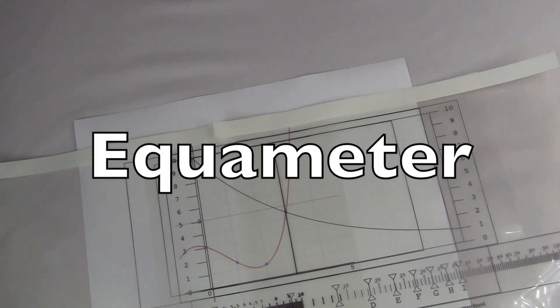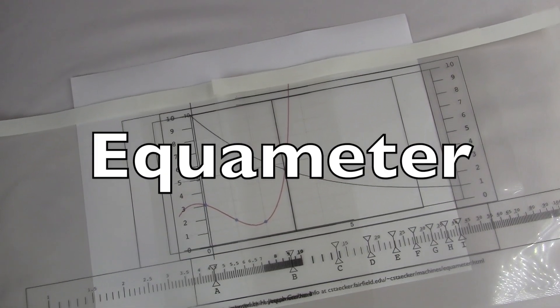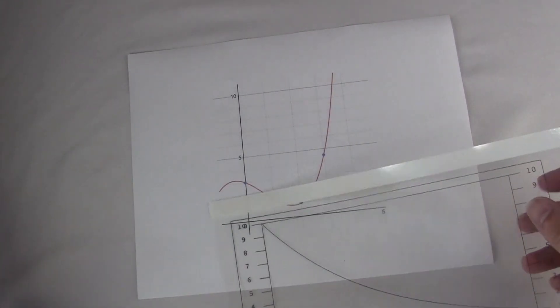This is the Equimeter, patented in 1959 by H. Joseph Gerber. I've never seen a real one, so I made my own.